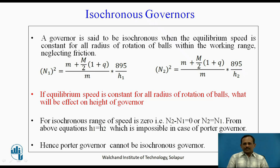Now let us consider a Porter governor in which minimum and maximum equilibrium speed is given as shown in the presentation. So, n1² = (m + M)/2 × (1 + q)/m × 895/h1, and similarly, n2² = (m + M)/2 × (1 + q)/m × 895/h2.